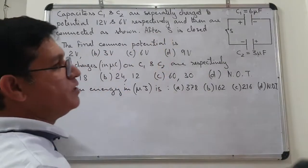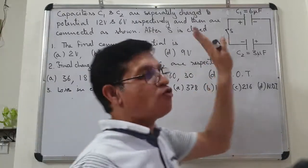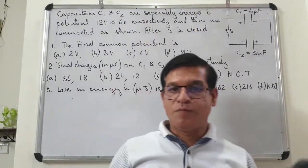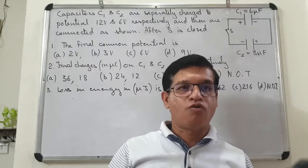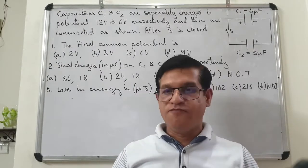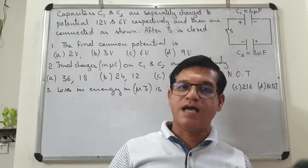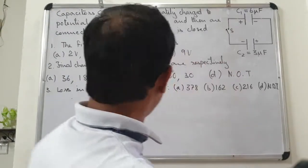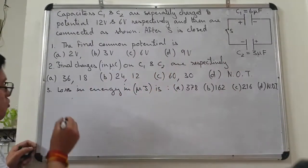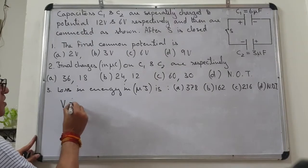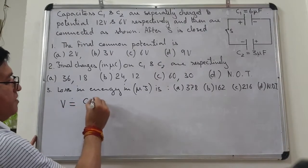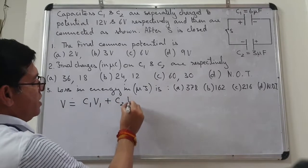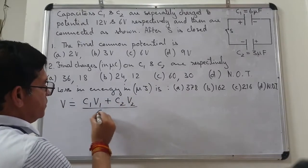The first question asks: find the final common potential. Recall from earlier: when two conductors are connected, the same formula is valid for capacitors. The common potential formula is V = (C1·V1 + C2·V2) / (C1 + C2).